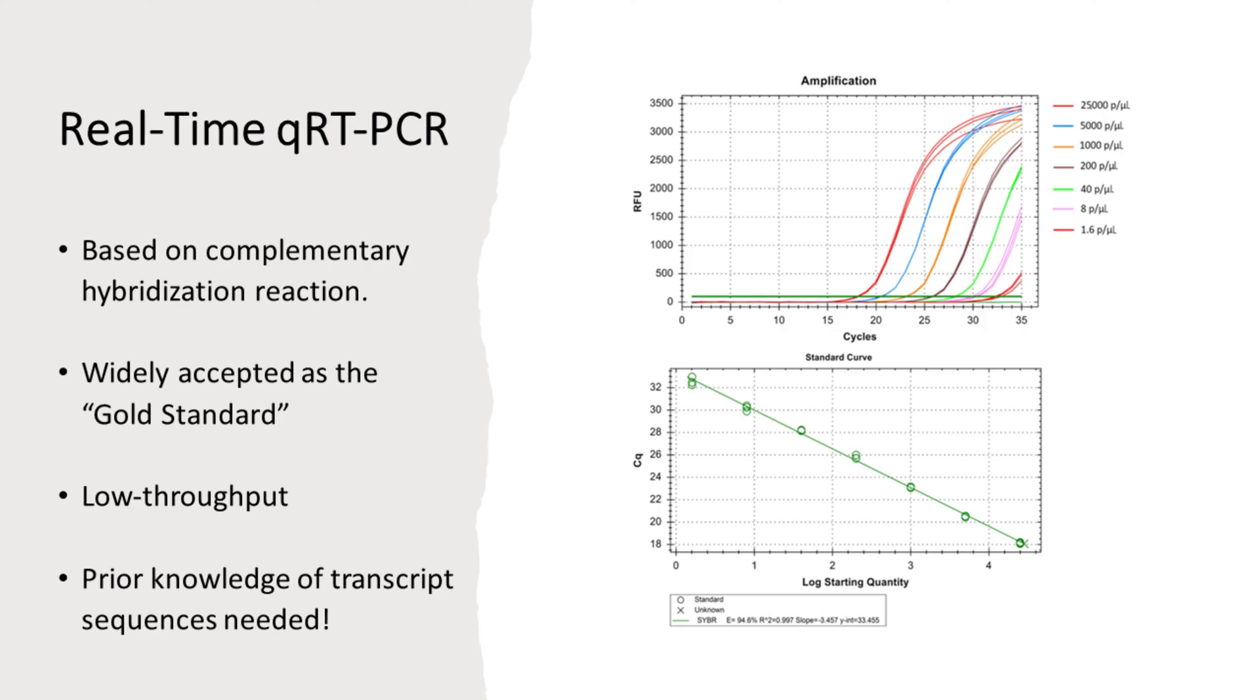With the primer and probes correctly designed, the qRT-PCR technique can quantitate the copy number and the expression level of the target transcript with a wide measurement range. qRT-PCR is thus often treated as the gold standard in transcriptome analysis.